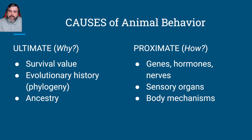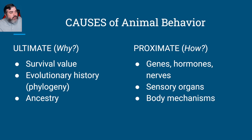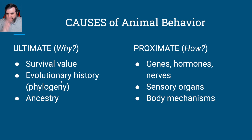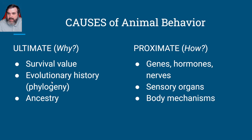Going to Tinbergen's ideas, a lot of them go into two types of questions. There are ultimate questions and proximate questions. Ultimate questions are 'why,' and ultimately these all go back to evolutionary history — why did the organism evolve this way? Ultimate is evolution. Think of physical characteristics as evolutionary, but behaviors can be evolutionary as well. Survival value, ancestry — all of this goes with ultimate.